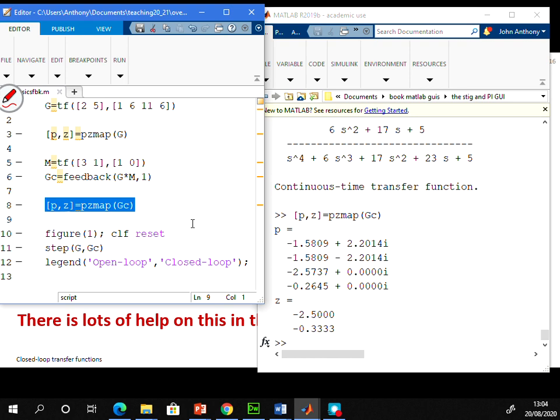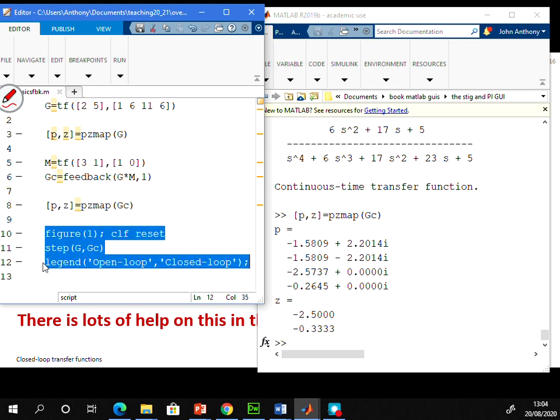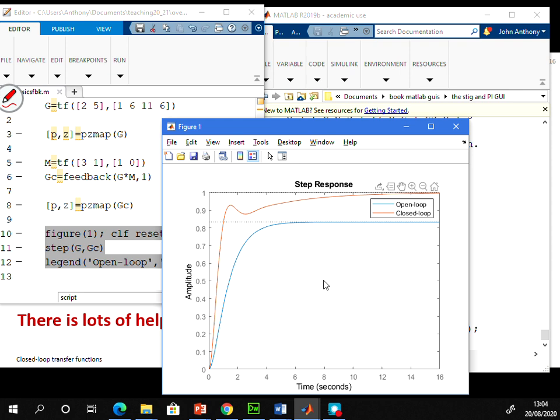If you want to look at the responses and see how the behavior changes from open loop to closed loop, I've got this command step. And you see I've put the open loop in and the closed loop. So if I run those three commands and there you can see there's my diagram. The open loop in blue and the closed loop in red.